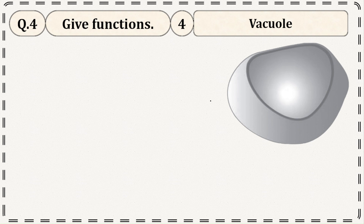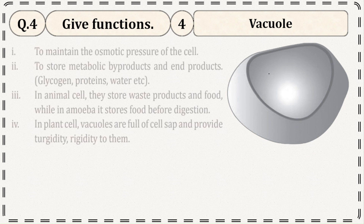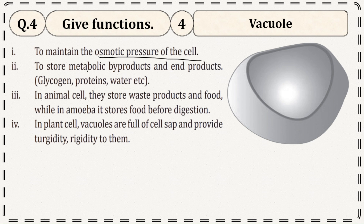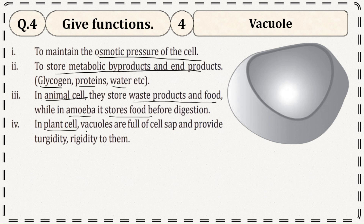Functions of vacuole: It stores metabolic bioproducts and end products — glycogen, proteins, and water. In animal cells, vacuoles store waste products and food, while in amoeba they store food before digestion. Plant cell vacuoles are full of cell sap — water and other materials — which provide turgidity and rigidity to them.